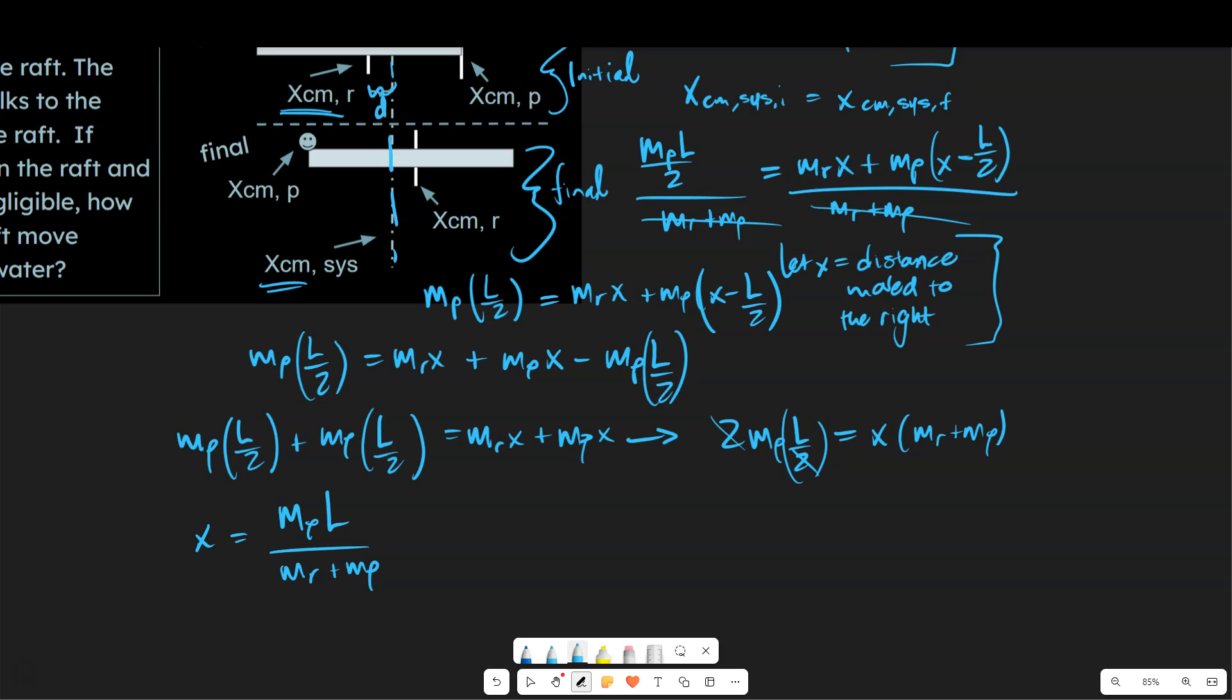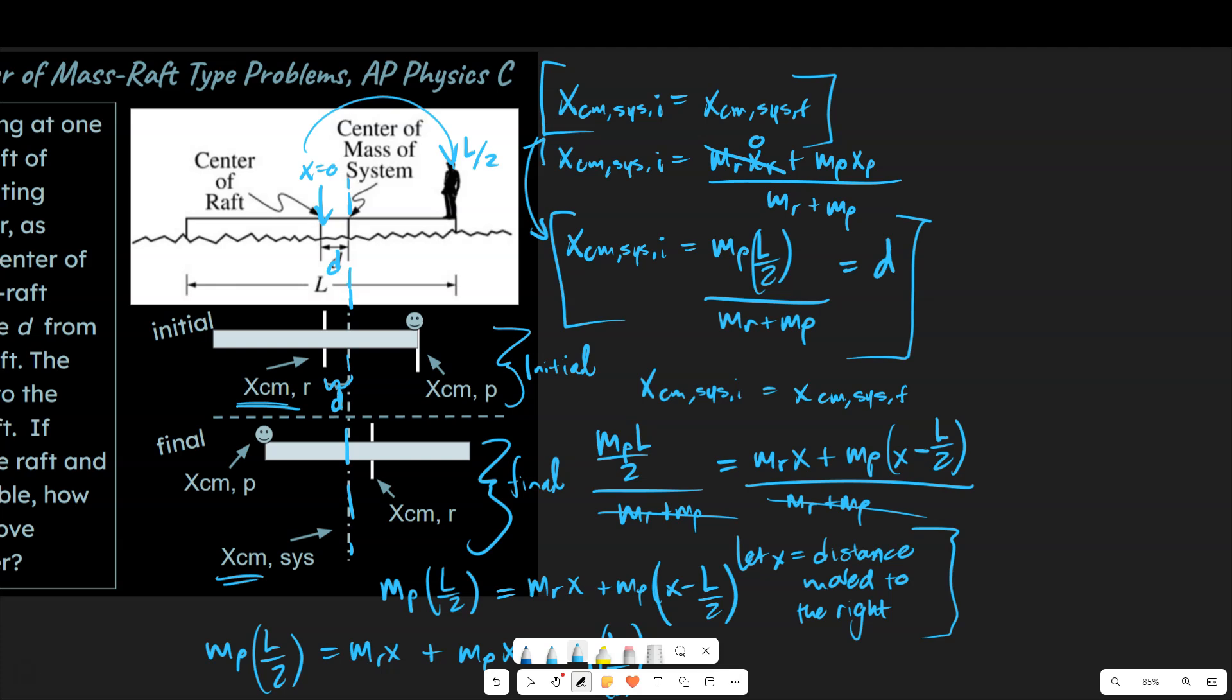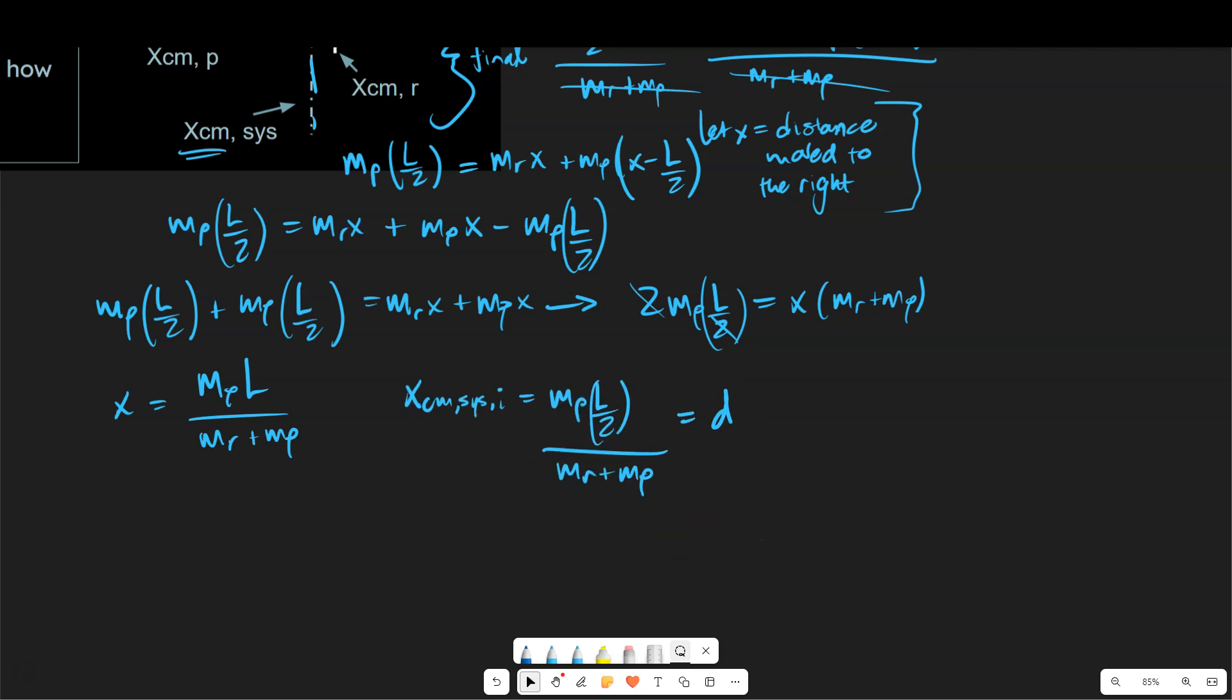Now we could ask the question, how does this compare to the previous d value? So if we take a look up here and let me go ahead and grab this really quickly. Okay, very good. So now we've solved for x and now we've solved for d previously.